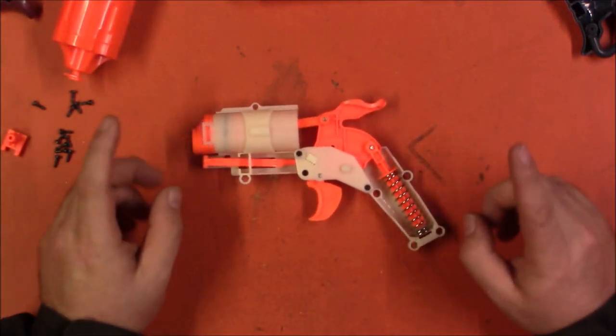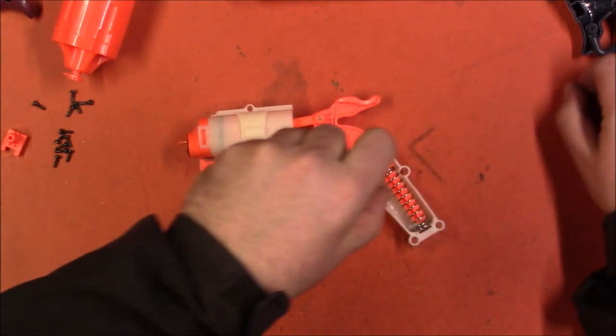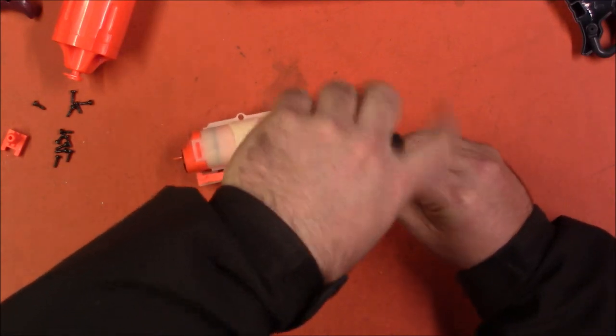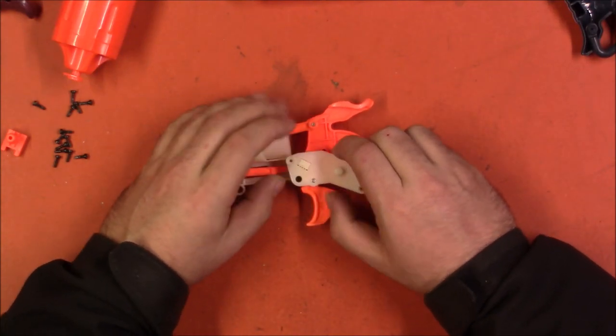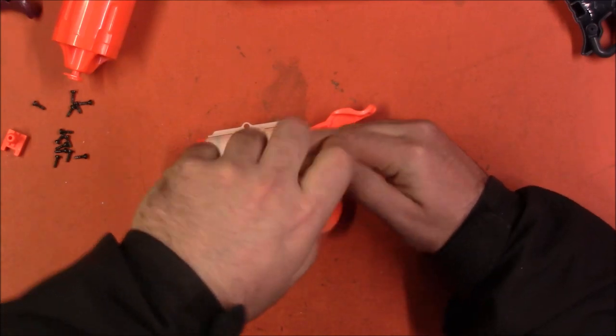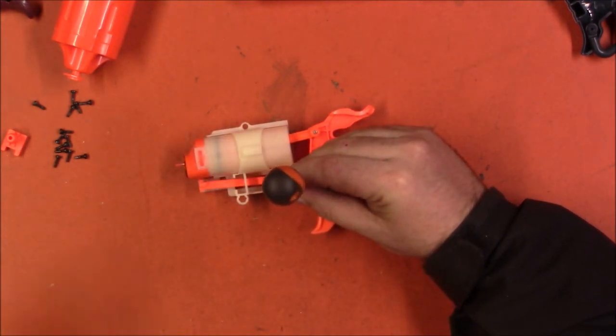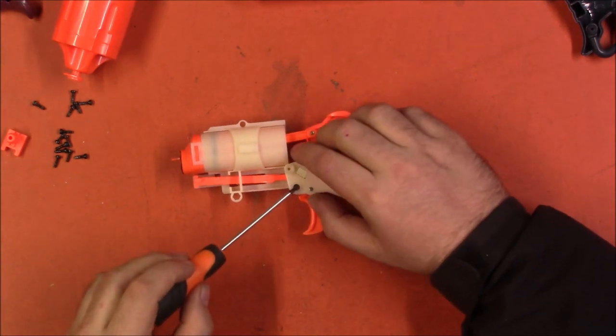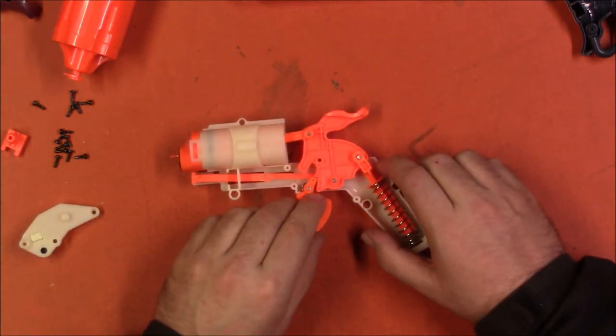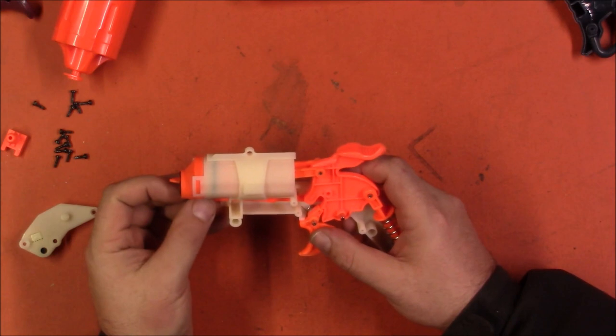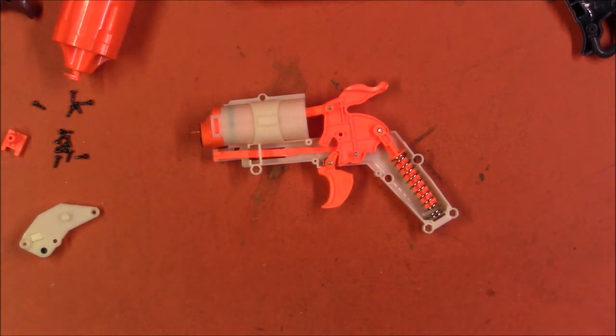Now we're going to get into the part where things can get a little bit trickier. This is essentially the firing internals. There are two more screws in here. They appear to be the same size. And then this plate can get one more screw. Oh, I need a smaller screwdriver to reach that one. Now we can get into what I assume are going to be the two parts that are going to give people problems.